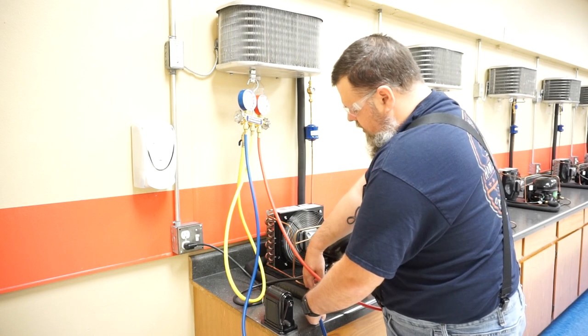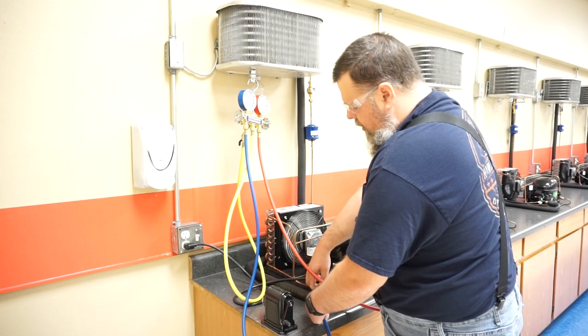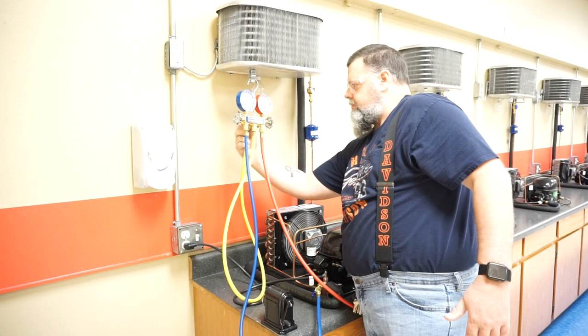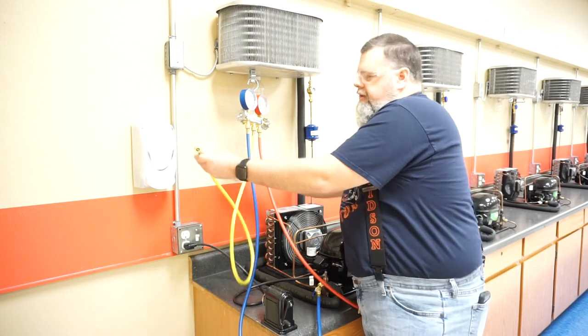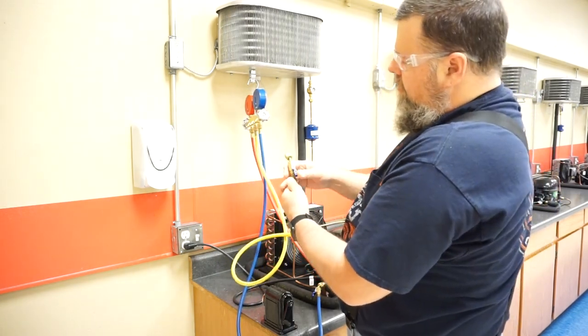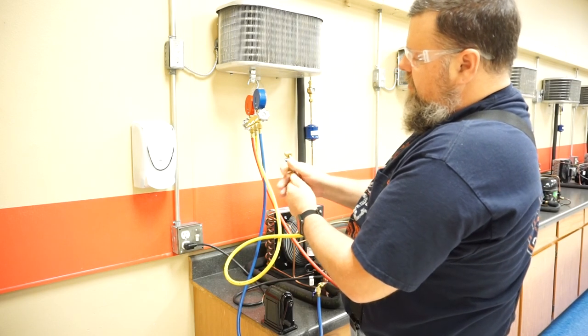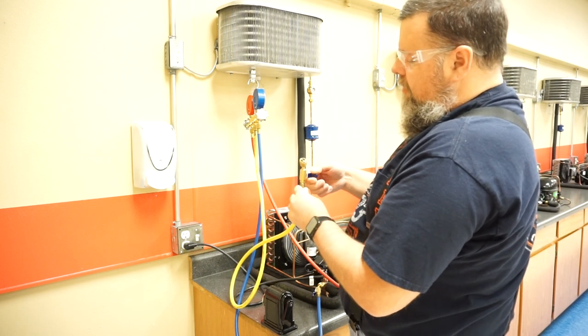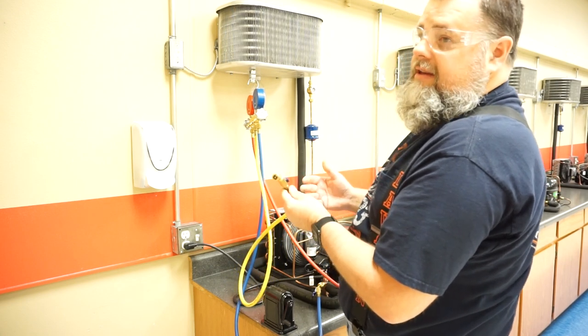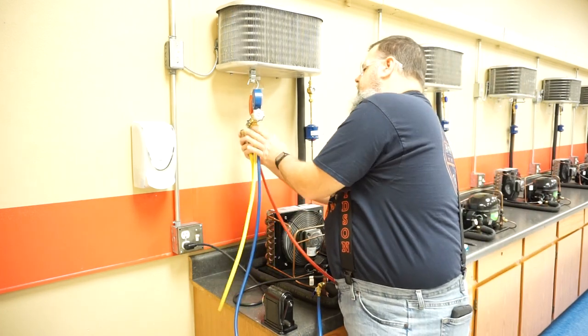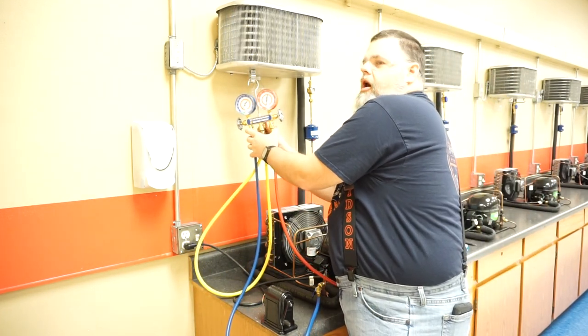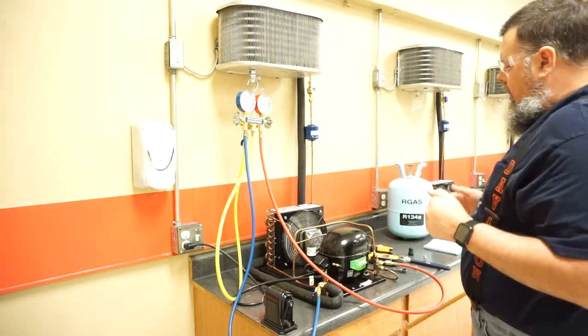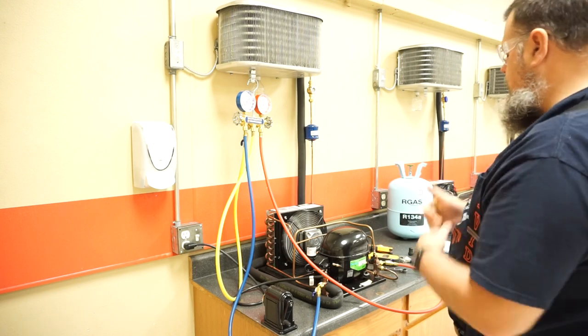Now these hoses we're using are your standard hose but they do have low loss fittings on them. Low loss fitting I will show you before I go any further. Your low loss fitting looks like this and you can close and open that line with this. It's very good to have when they're already built in like this. This is a ball valve so it really doesn't go bad that easy. These are manual instead of automatic. You can get automatic ones which open and close for you.